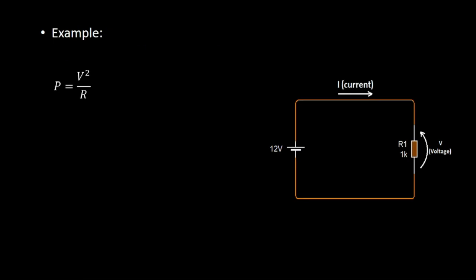Now we see an example of how we can calculate power in a resistor. This is the circuit — we have a power supply of 12 volts, the current is passing through this resistor, and the resistor value is 1 kilo ohm. Now we want to calculate the power in this resistor.